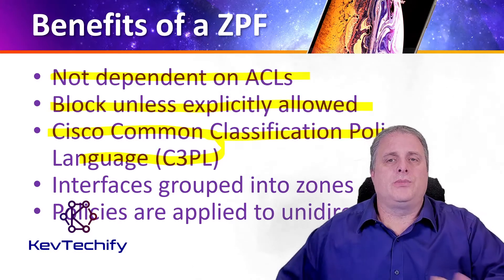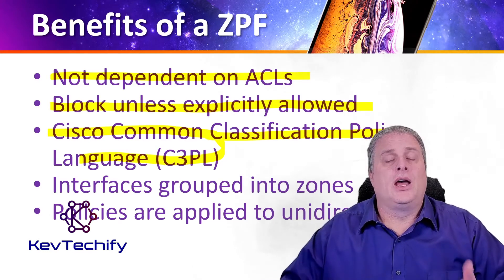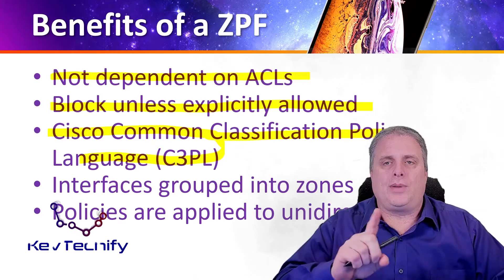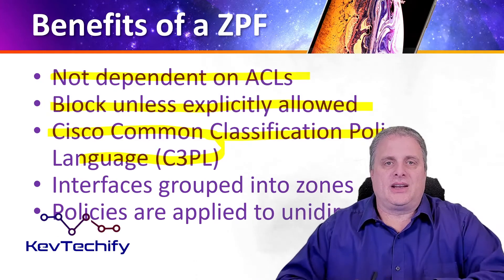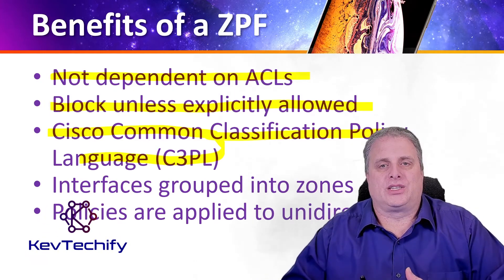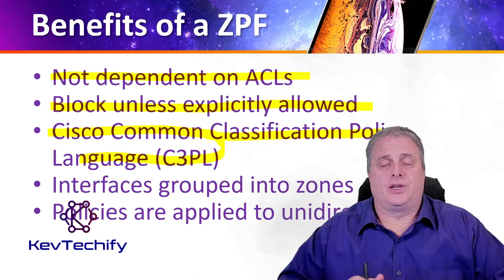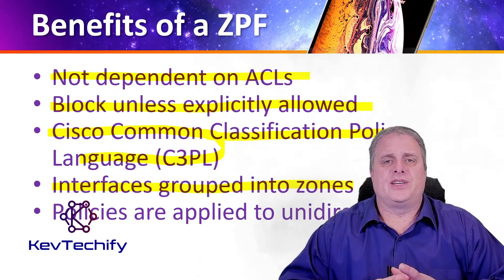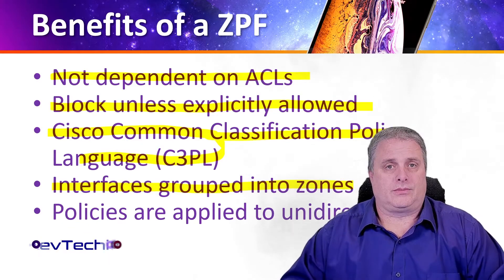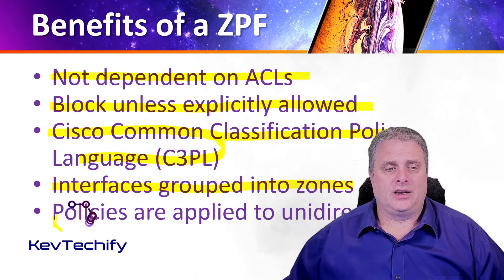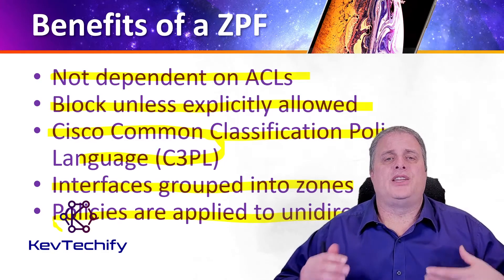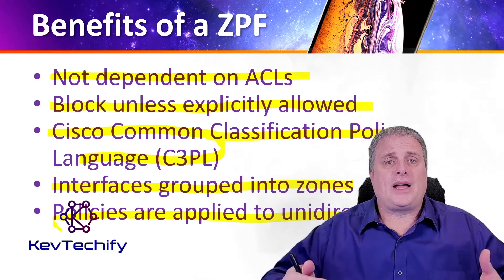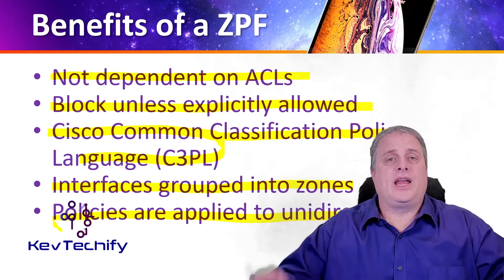C3PL is a structured method to create traffic policies based on events, conditions, and actions. This provides scalability because one policy affects any traffic, instead of having multiple access control lists and inspection actions for different types of traffic. The next benefit is that virtual and physical interfaces can be grouped into zones. And the final benefit is policies are applied to unidirectional traffic between zones, so traffic going one direction can have one policy, and the other direction can have a different policy.